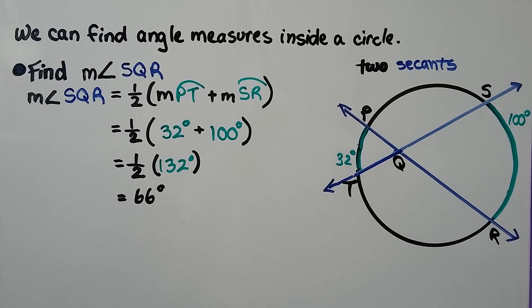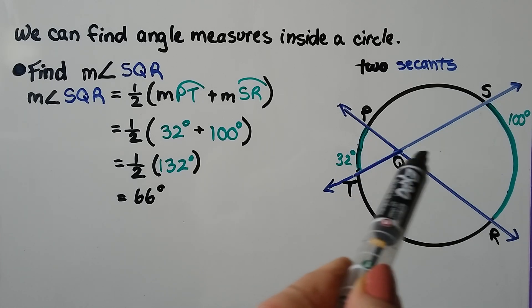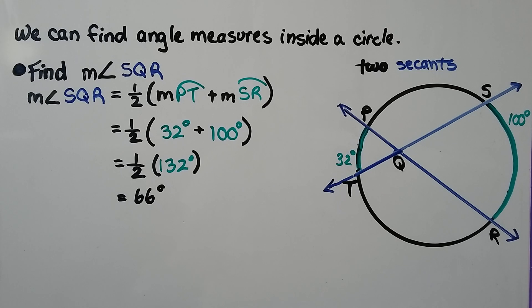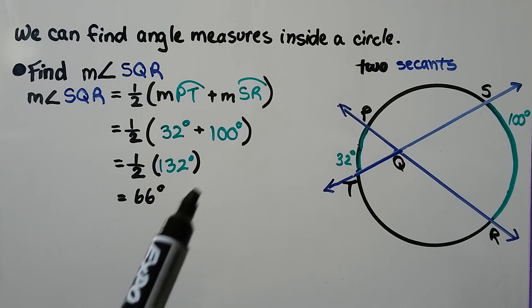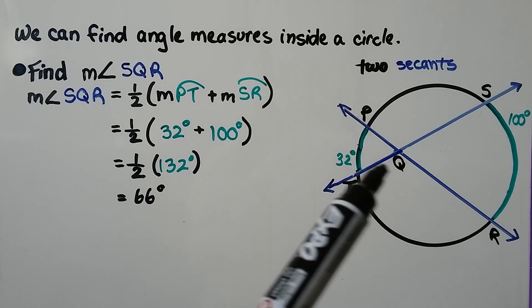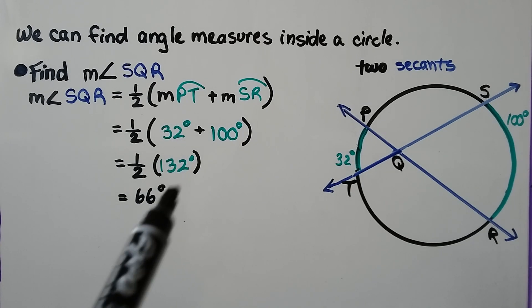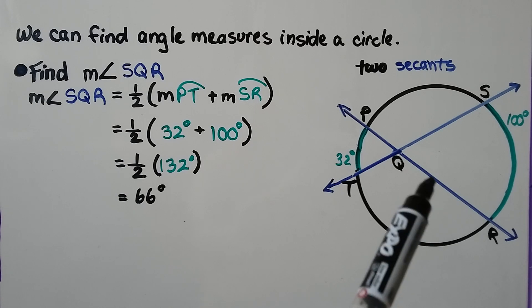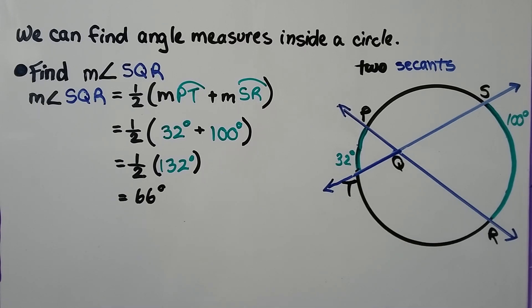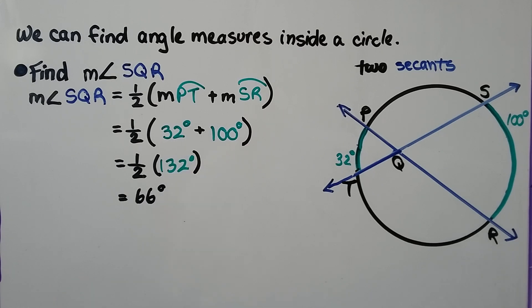We can find angle measures inside a circle. We need to find the measure of angle SQR. The measure of angle SQR equals half times the measure of arc PT — which is 32 degrees — plus the measure of arc SR — which is 100 degrees. Adding them gives 132, and half of that is 66 degrees. The two secants intersect in the interior at Q, so we add.